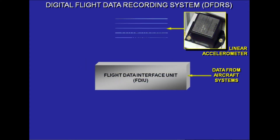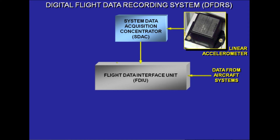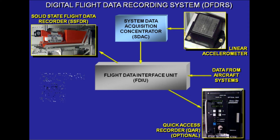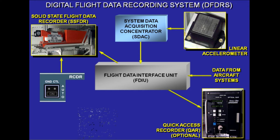The flight data interface unit, FDIU, is the heart of the digital flight data recording system, DFDRS. To fulfill the mandatory requirements of crash recording, the FDIU acquires and formats various critical flight parameters and system data before supplying the solid state flight data recorder, SSFDR.